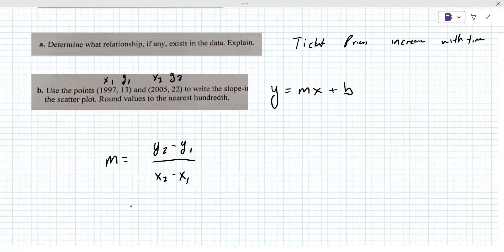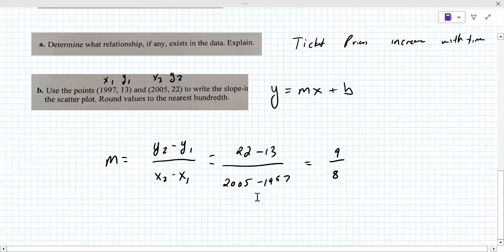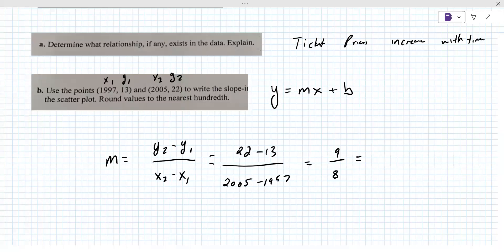What did you come up with for the slope? I got, would I do 2005 minus 1997? That's on the bottom. Yes. Top is the Y values, 22 minus 13. Okay. Nine over eight. And then you got to put that in a calculator and round to the nearest hundredth. So two decimal places.